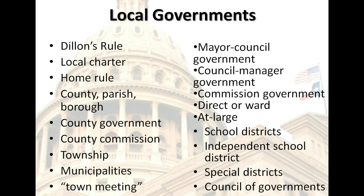School districts are responsible for delivering education programs in 13,051 areas of the country. Most school systems are run as independent local governments, where locally elected school boards and appointed administrators deliver education services within the guidelines of state policy and funding. One of the hottest debates in school policy today concerns how to pay for and guarantee equity in public education. The United States also has 37,381 independent limited-purpose governmental units other than school districts, known as special districts, covering parks, natural resources, fire protection, libraries, and public authorities. Special districts represent the fastest growing form of local government during the past two decades.